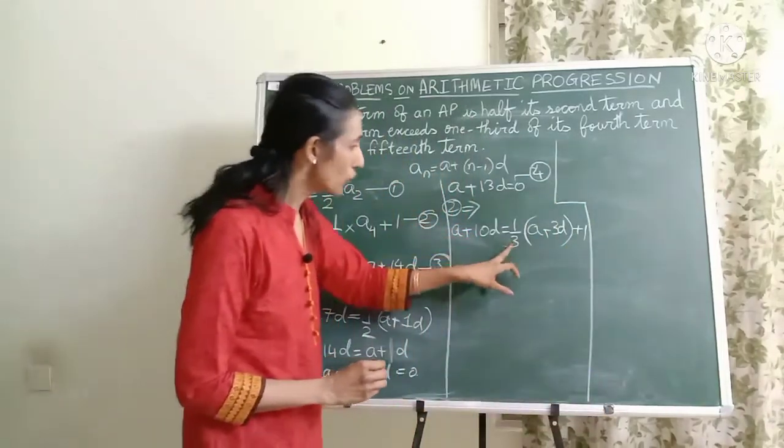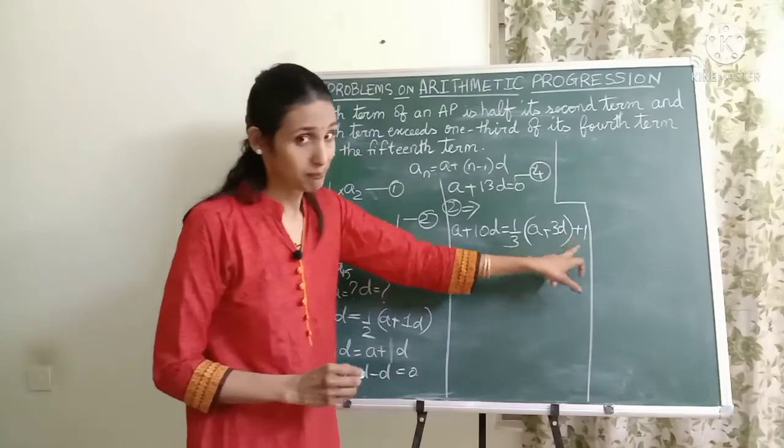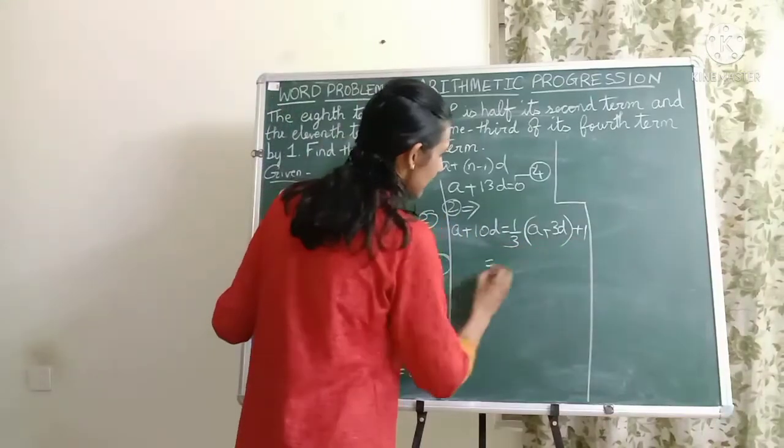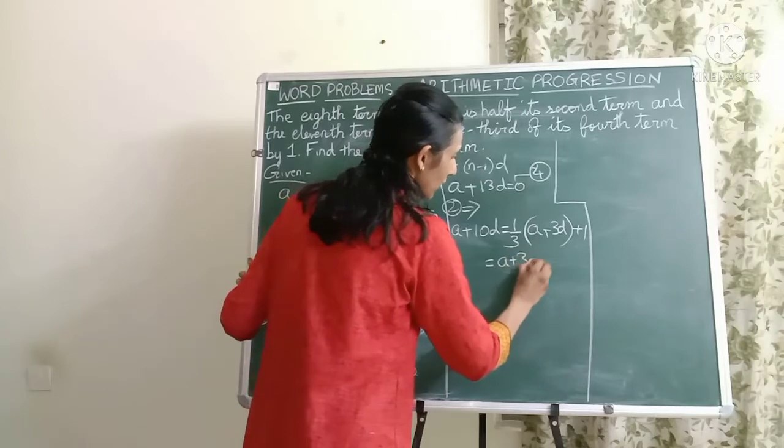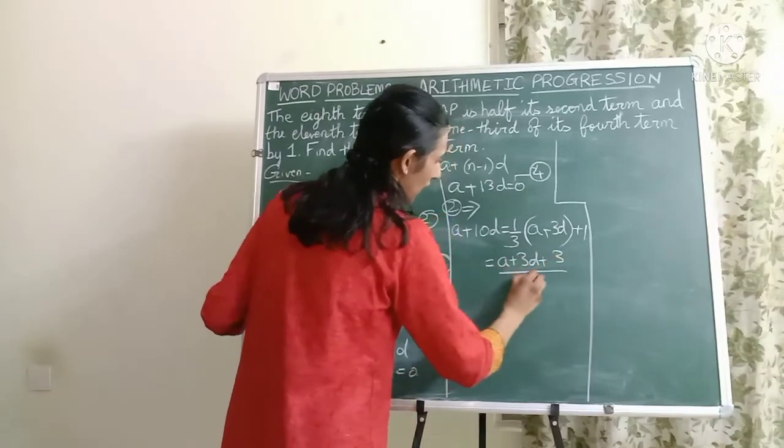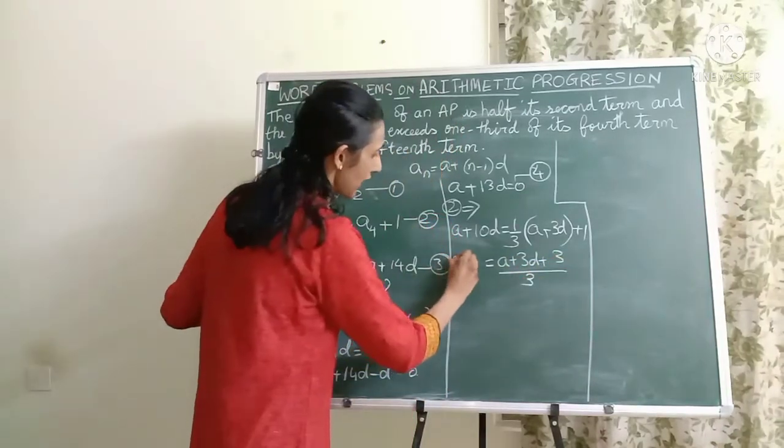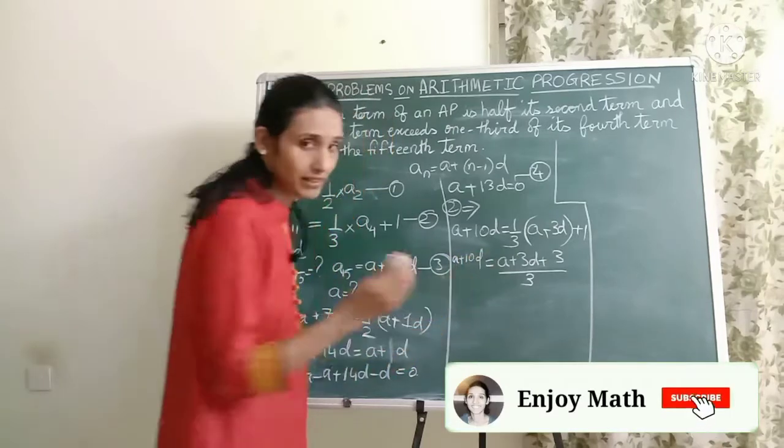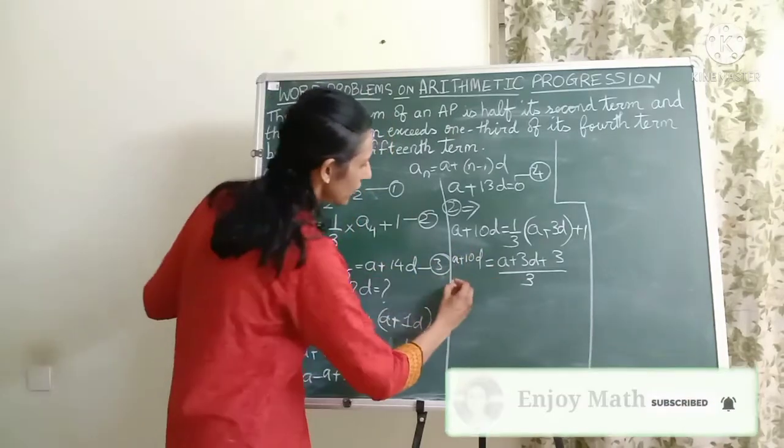Don't bring the 3 to the other side because you have a plus 1 over here. So let's take the LCM. Won't be that hard. So here I have A plus 10D. Now let me bring the 3 to the other side. So I'll have 3A plus 30D equals to A plus 3D plus 3.